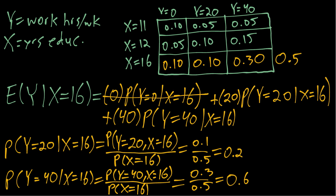So now finally we can plug those back into the original conditional mean formula we were working with. We'll have 20 times 0.2 plus 40 times 0.6, and if we do that out we should get 4 plus 24, or 28.